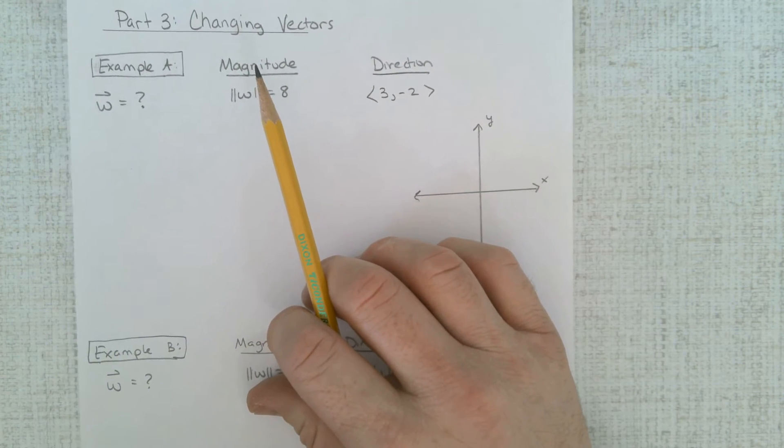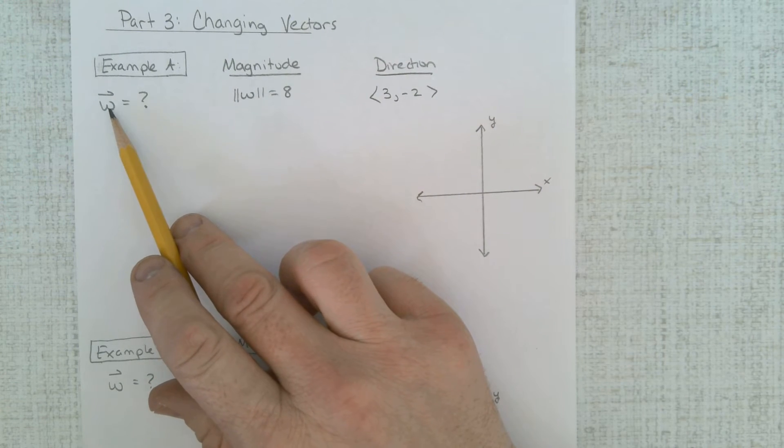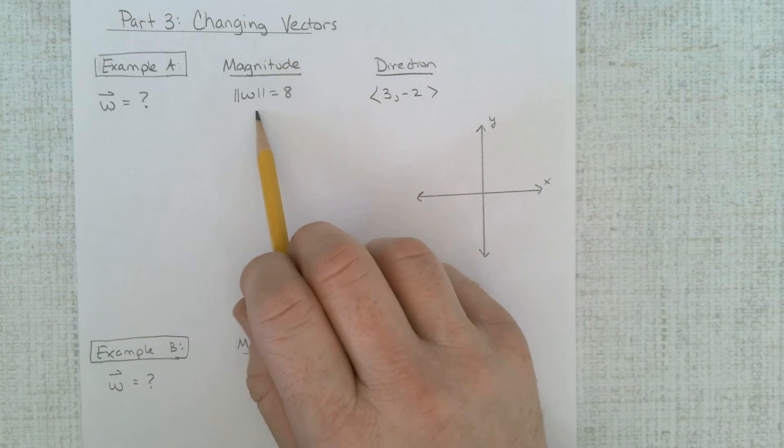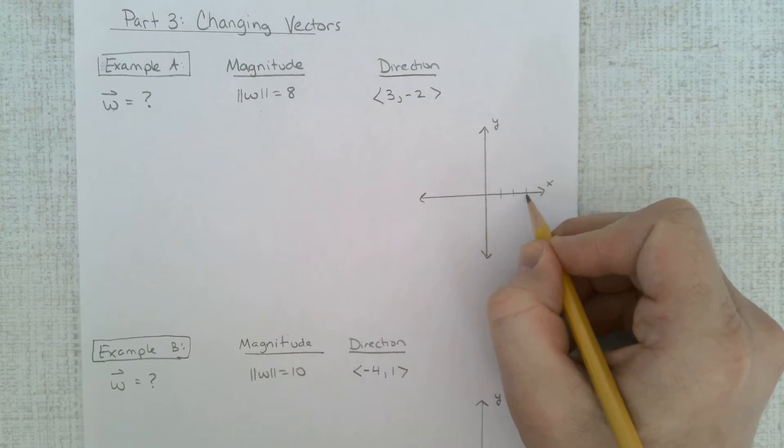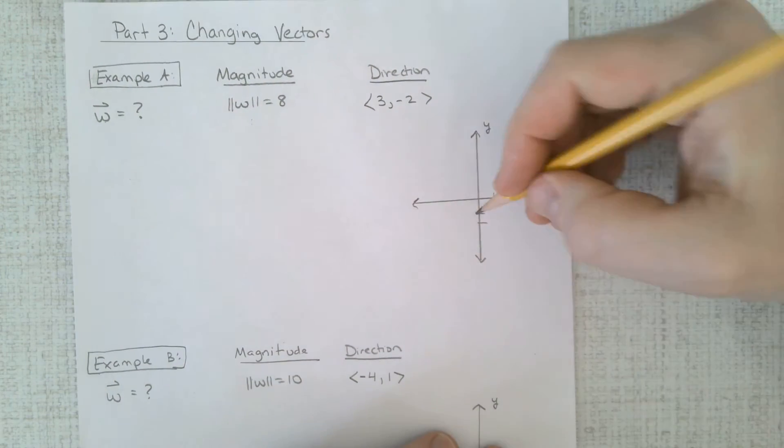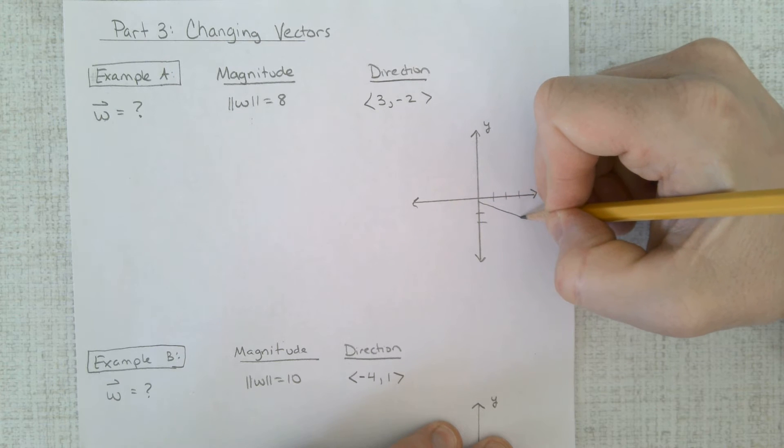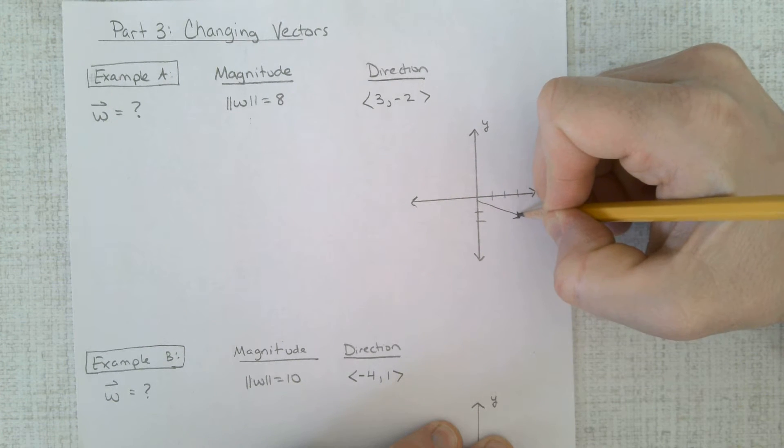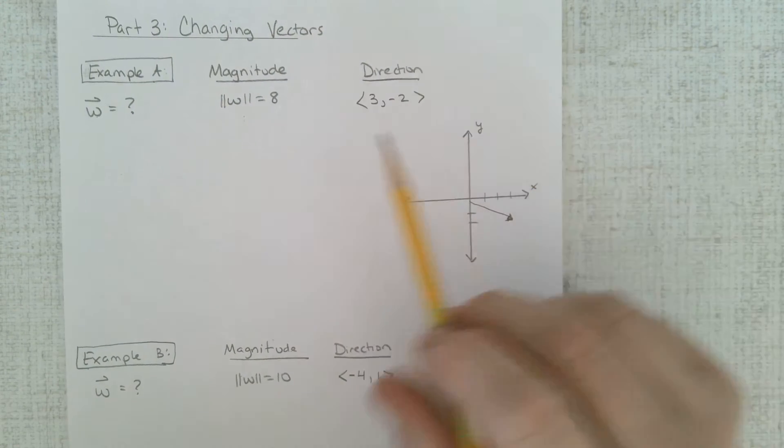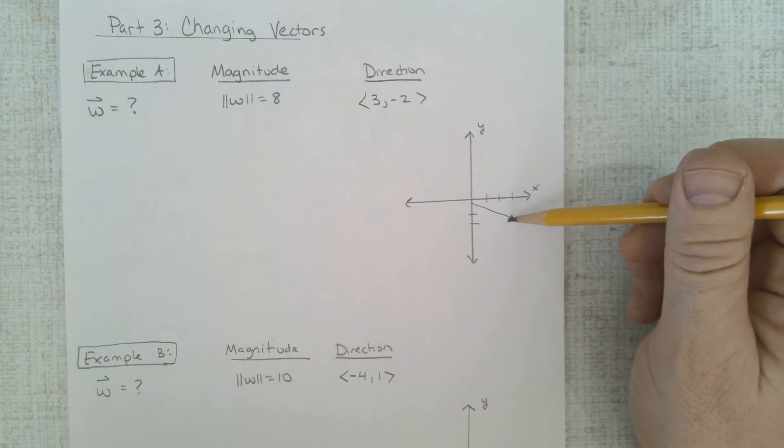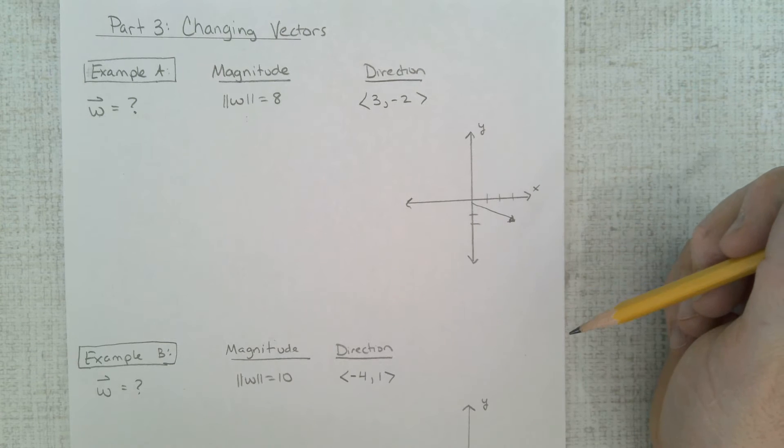So let's go ahead and see what this is going to look like. We're going to write this vector, this magnitude, this direction. Well, let's see what this direction looks like. First off, 1, 2, 3, negative 2. So we're going to go out here to right there and there's that vector. It's going 3 and that way. Well, obviously this does not have a magnitude of 8 so we need to take this direction and make it a magnitude of 8.